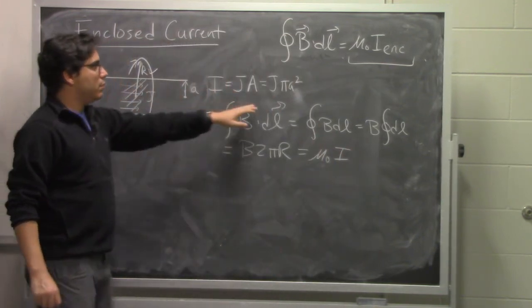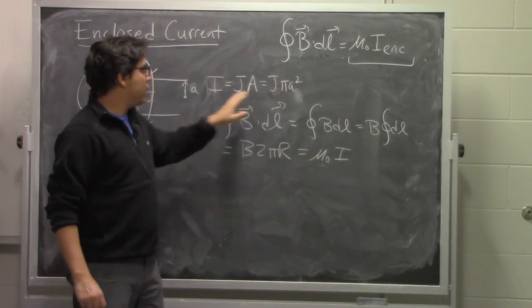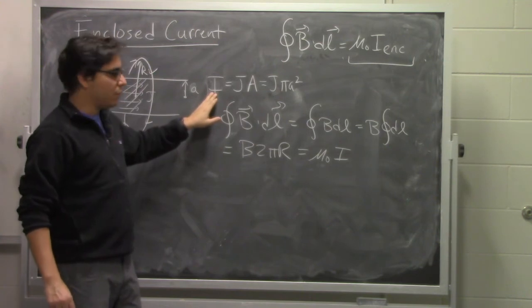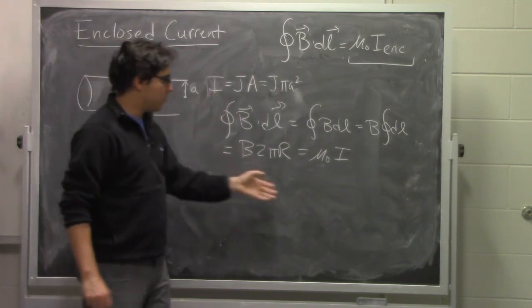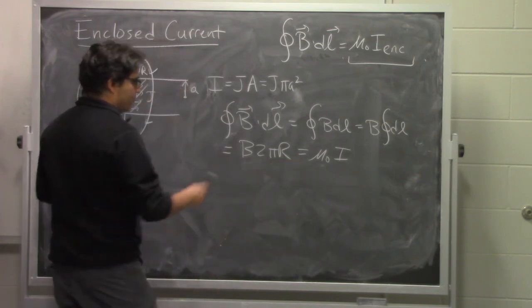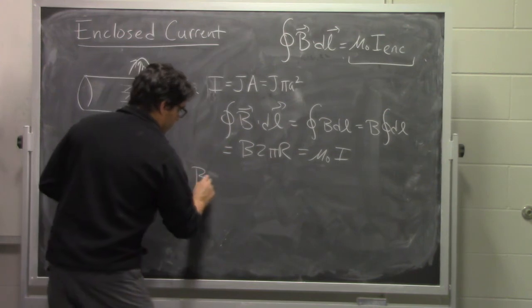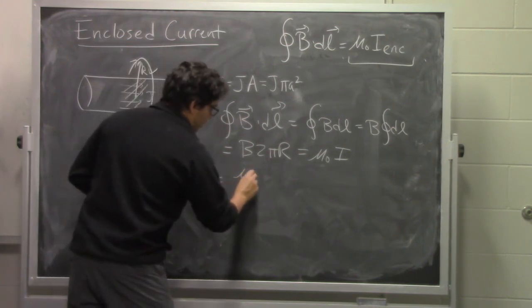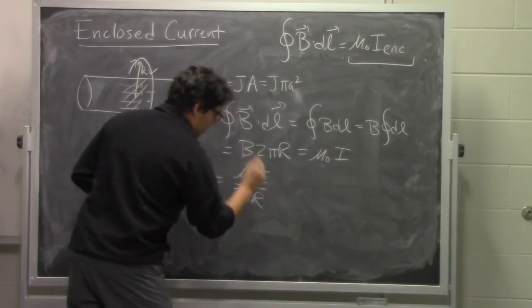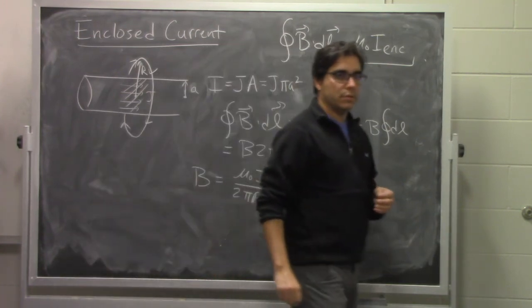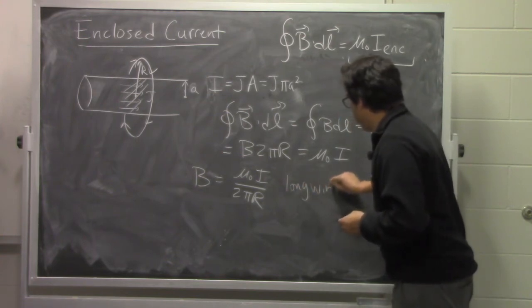Now, we know from before that that is the current density times the cross-sectional area. But it's exactly just the total amount of current that's in this situation. So just like we did with Gauss's law, we can take the geometric quantities onto the other side, and we can find that the magnitude of the magnetic field for this kind of wire is mu nought i over 2 pi r. This is exactly the equation that we got for a very long wire.